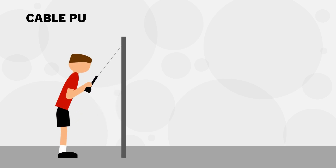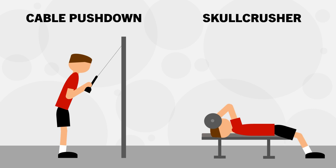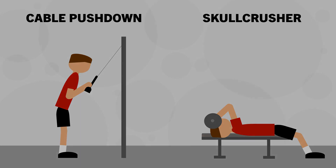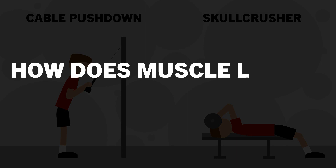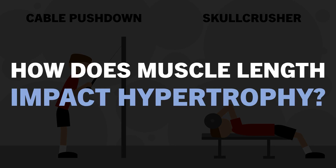We know that there are multiple different exercises which can all train the same muscles. However, not all exercises are equally effective. One of the reasons for this is due to the length that it trains the muscle at. In this video we will explain how exactly muscle length influences hypertrophy and what this means from a practical perspective in our training routines.